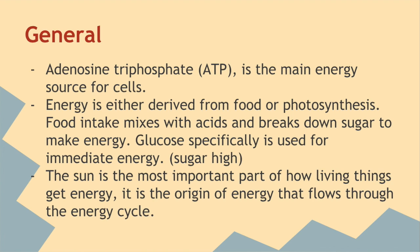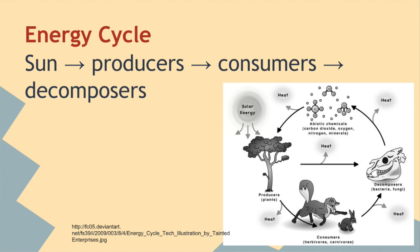The sun is the most important part of how living things get energy. It is the origin of energy that flows through the energy cycle. The energy cycle starts with the sun, where it radiates its energy to the earth. It is picked up by producers — plants — which use it for photosynthesis. Plants are then eaten by consumers, herbivores or carnivores. And when consumers die, they are decomposed by bacteria and fungi, and that's how bacteria and fungi get their energy.